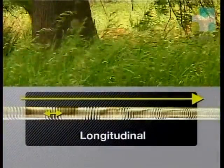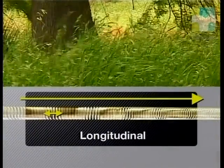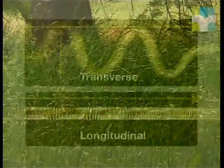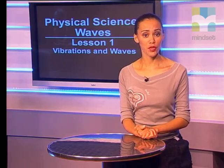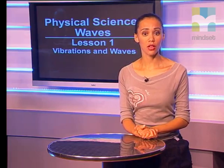This is called a longitudinal wave. There is a clear difference in the particle movement of a transverse and a longitudinal wave. Now, to differentiate between transverse waves and longitudinal waves, Shanti will also demonstrate a longitudinal wave in a slinky spring.